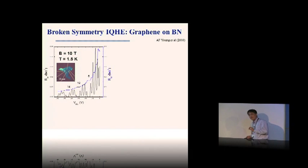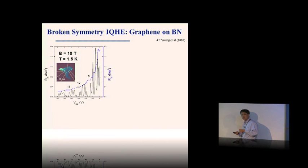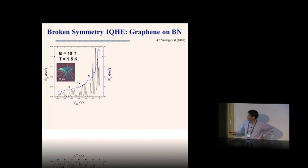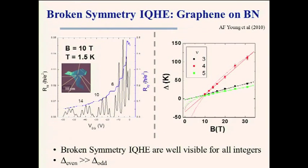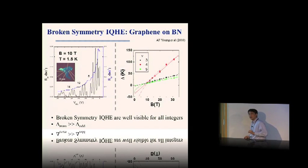Doing the gap measurement for all fractions, we clearly see interesting trends. Even-numerator states — 4/3, 8/3, 10/3 — have larger gaps than odd-numerator states — 7/3, 11/3, 13/3 — at 35 tesla. As you go to higher fractions, the gap size decreases, especially for even-numerator states. These structures are related to the SU(4) spin structure inside each Landau level, and provide a rich flavor of the physics generated by SU(4) symmetry.